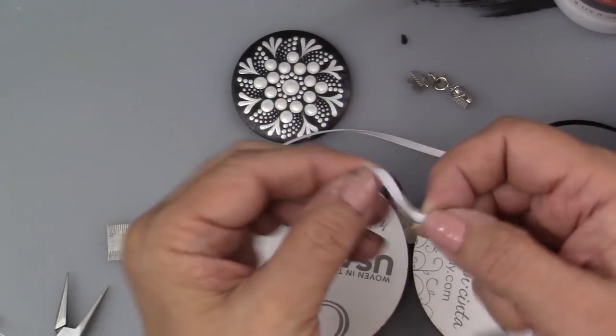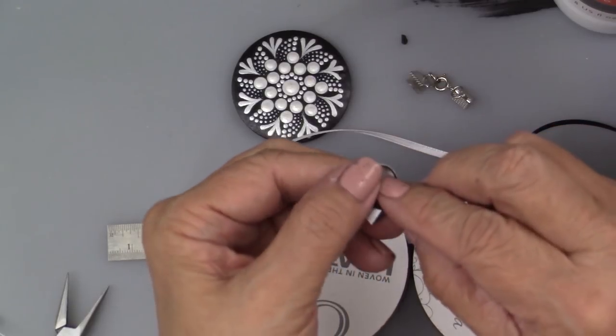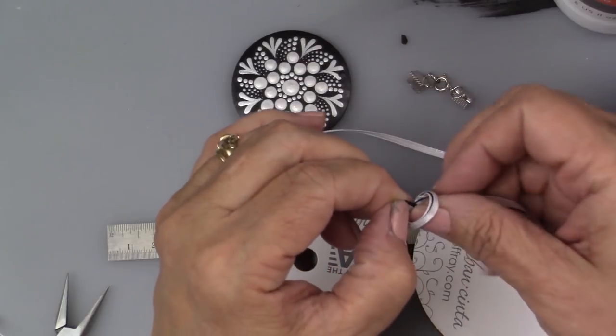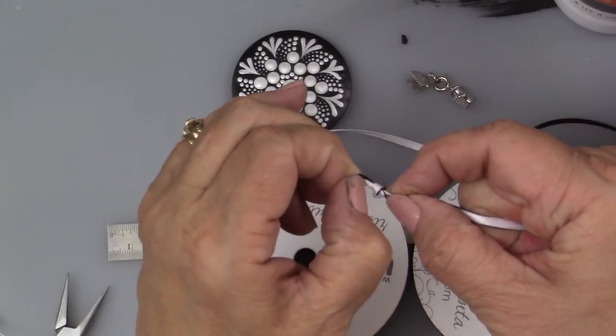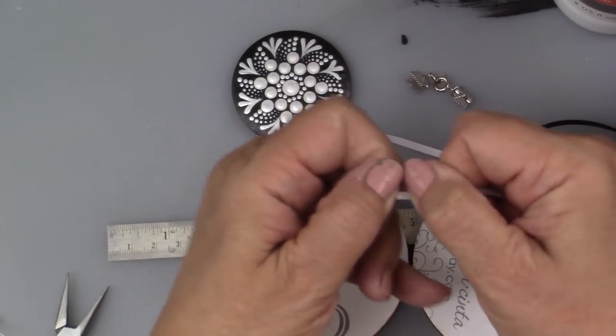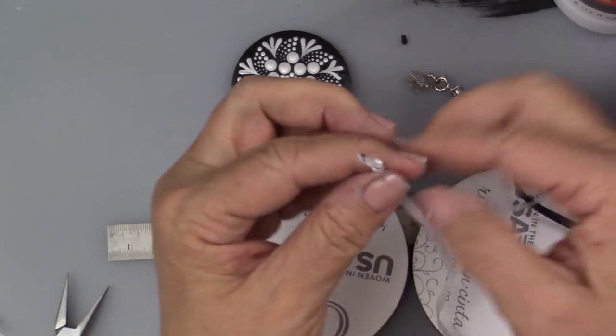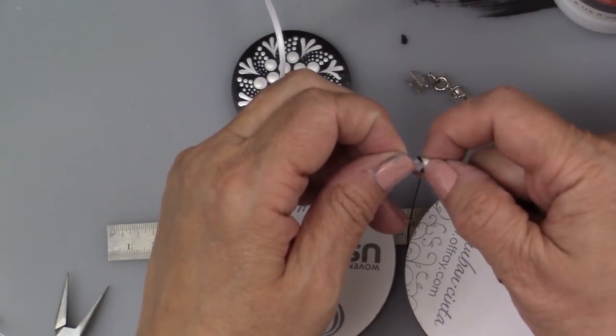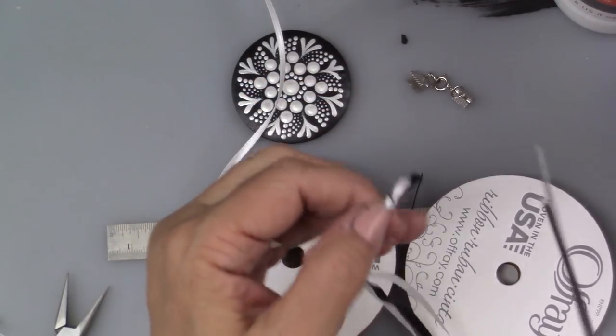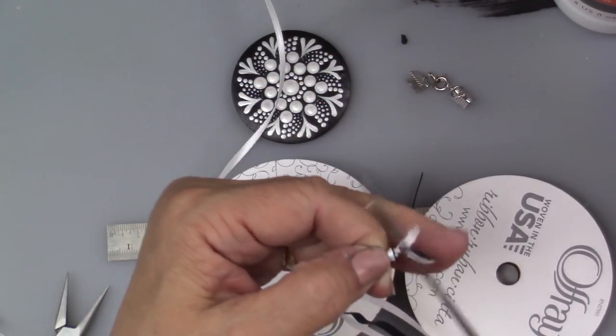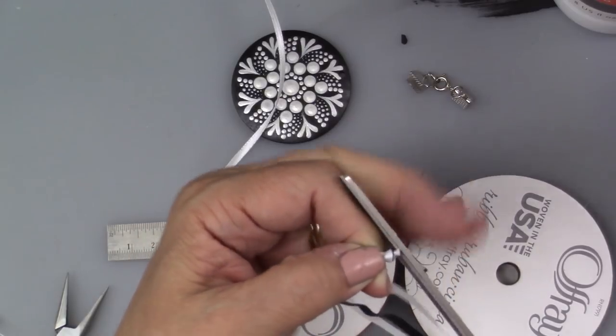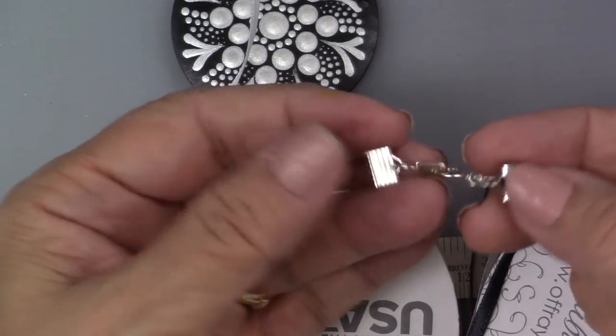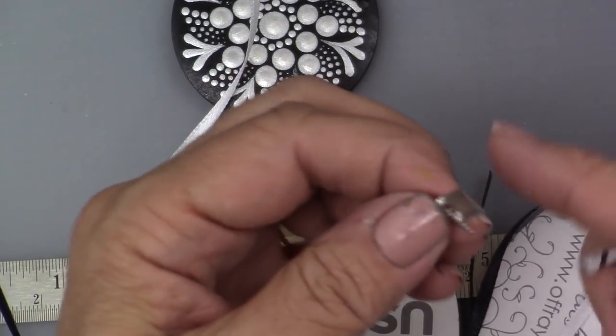I'm going to put a knot in the end. With these crimps, they've got a lot of teeth and should grab the ribbon pretty well. But I want to give a little extra because these are pretty fine ribbons. I just want to put a little knot there. You can leave that step out if you don't want to do it. I'll put a knot on each end and cut off the excess.